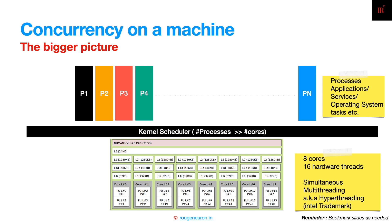In a multi-user environment there could be multiple users logged in. This will vary based on the kind of device — from an IoT device to a server-grade machine — with desktops somewhere in the middle, involving a window manager. The key point is that the number of processes can be much larger than the number of cores.